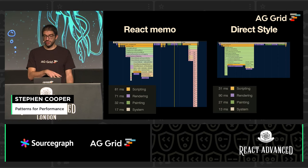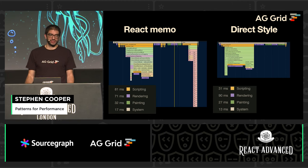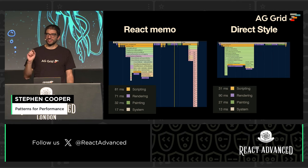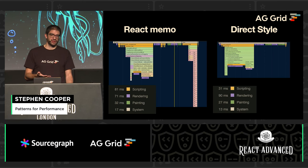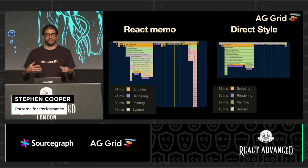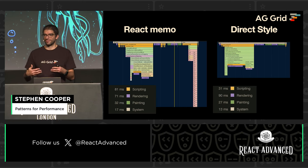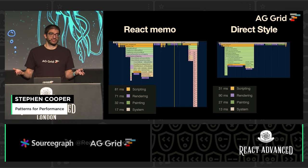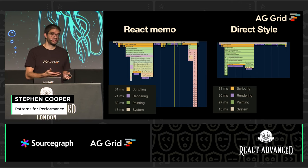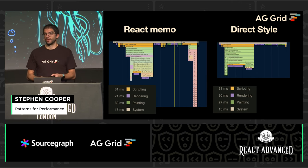We've gone from React Memo into the direct style update, which is giving us a much better user experience. Also worth noting: it's not only a better user experience if the user remembered to use Memo. This is now also going to work if the developer hasn't wrapped their component in Memo. So we've enabled our grid to be much more robust to however it's being configured — because even if developers are making suboptimal choices, as an application library we want to give them the best opportunity for our product to still work as fast as it can.